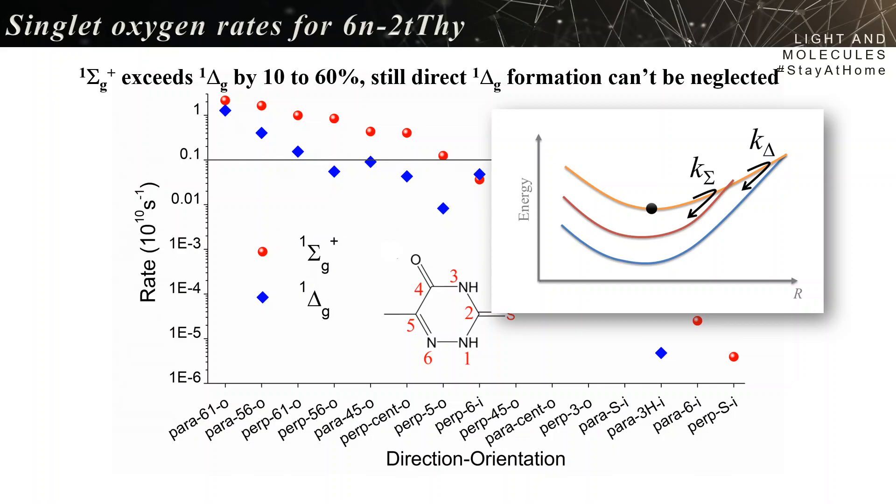Usually it's assumed in an experiment that you form the sigma, and the delta is formed afterwards by deactivation of the sigma. And those rates that we have here indicate that the direct delta formation is a thing.